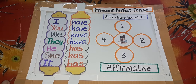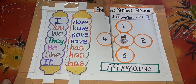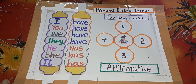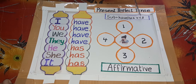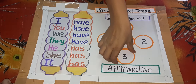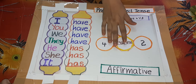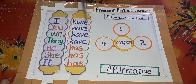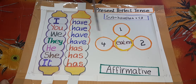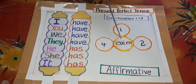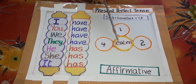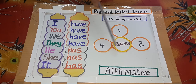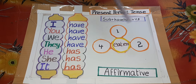Present Perfect Tense Affirmative: Subject plus have or has plus third form of verb. I have eaten, you have eaten, we have eaten, they have eaten, he has eaten, she has eaten, it has eaten.